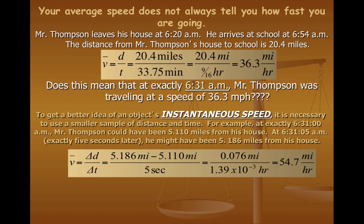Now, if we do this calculation, this time using the delta D and delta T, you'll see that my average speed over this five second interval, which is 1.39 times 10 to the negative third hours, is 54.7 miles per hour. But again, that's not even exactly my instantaneous speed because that's over a five second interval.